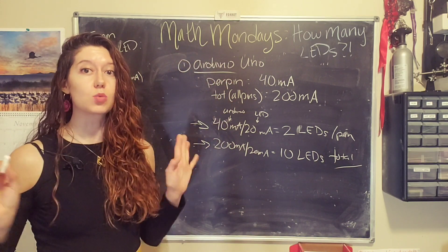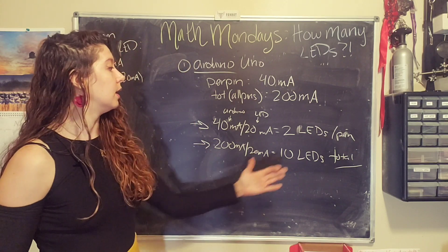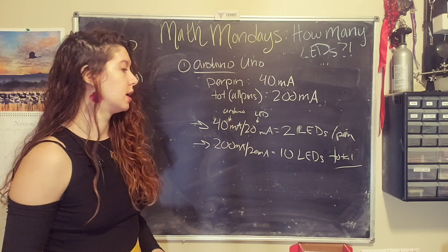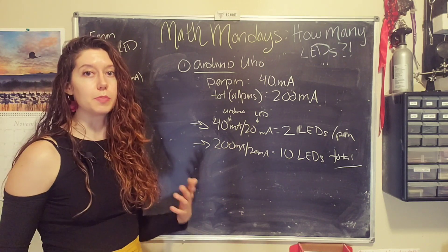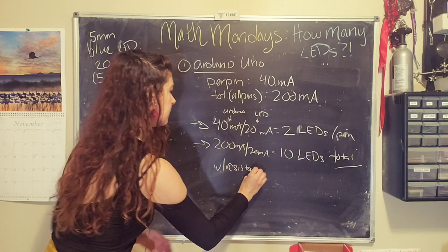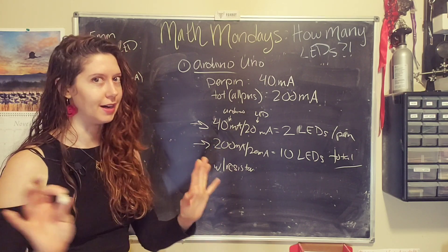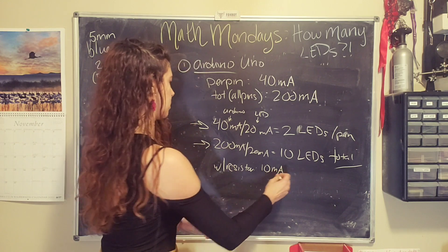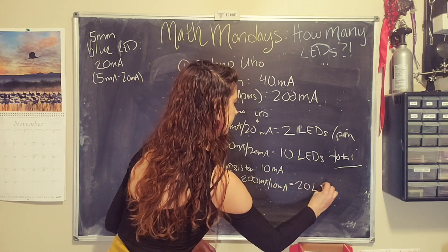If we add a resistor, we can drop the current consumed by the LEDs down to around 10 or even 5 milliamps. If you had a specific resistor value, you would use Ohm's law, but I just want to give a general overview for now. With a resistor, let's say we have 10 milliamps per LED. Then 200 milliamps divided by 10 milliamps is 20 LEDs total!